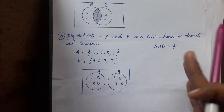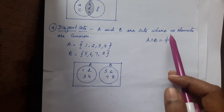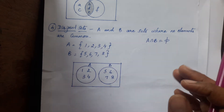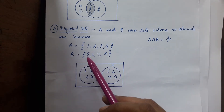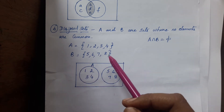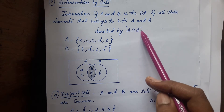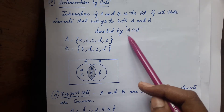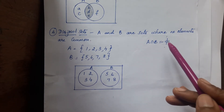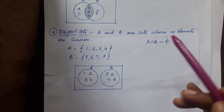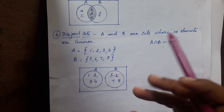Next is disjoint sets. As you already know from my previous video, A and B are sets where no elements are common. Here set A has elements {1, 2, 3, 4} and set B has elements {5, 6, 7, 8} — there are no common elements. So A intersection B equals the null set, which is an empty set. In the Venn diagram both circles are drawn separately with no overlap and no shading in between.